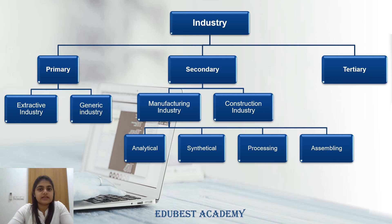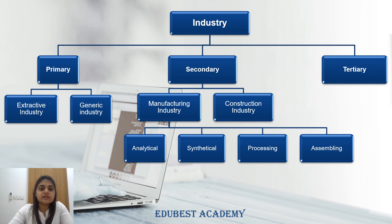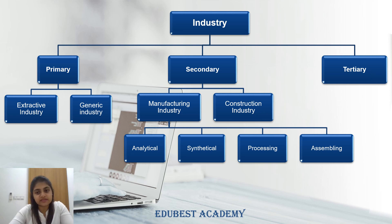Industry is divided into three parts: primary, secondary, and tertiary industry. Further, primary industry has two parts — extractive industry and genetic industry. Secondary industry also has two parts — manufacturing industry and construction industry. Manufacturing industry is further divided into four parts: analytical, synthetic, processing, and assembling industry.